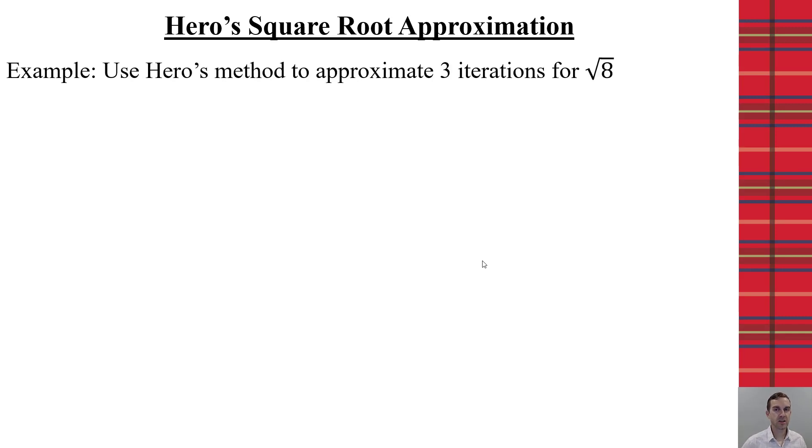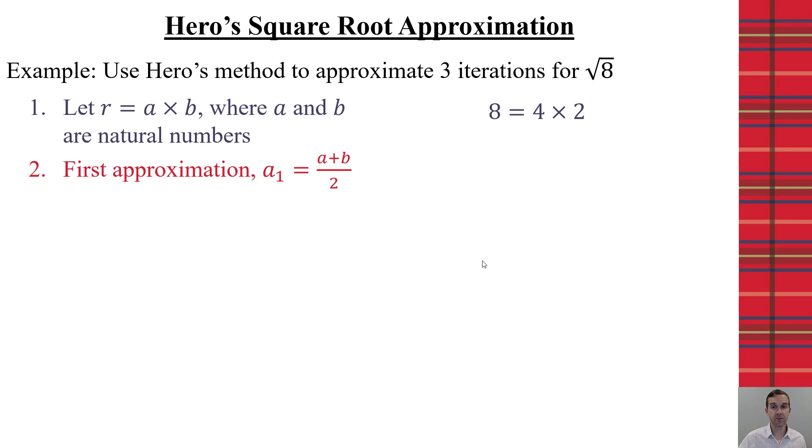So, let's look at the idea of taking the square root of 8 out of 3 iterations. Let's start with what is two factors that are natural numbers of 8? Well, let's use 4 times 2. The first iteration is just the average of those two numbers. So, the average of 4 plus 2 over 2 would be 3. So, 6 divided by 2 is 3.